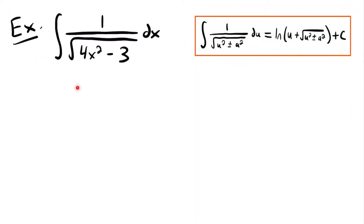Welcome back. Let's start with this example. We have the integral of 1 divided by the square root of 4x squared minus 3, times dx. And in order to solve this integral, we are going to use this integration rule.